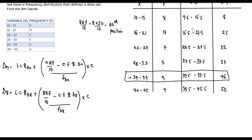Now we identify the required values. LCB_{d8}, the lower class boundary at the 8th decile, is 33.5. The frequency at the 8th decile, f_{d8}, is 9. The class interval c is the width of the class — the difference between upper and lower class limits: 15 − 10 = 21 − 16 = 27 − 22 = 5.